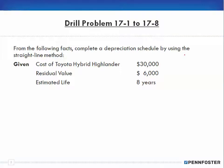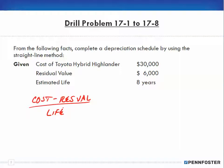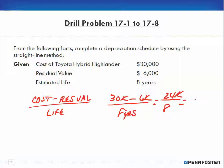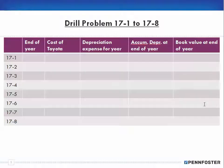For the straight line method, remember we're taking our purchase price — our cost — less the residual value or salvage value, and then dividing by the useful life in number of years. So if our cost is $30,000 and we have a residual value of $6,000, meaning at the end of eight years that's the amount we feel the asset will be worth, we get $30,000 minus $6,000 equals $24,000, divided by 8 years, which means we depreciate the asset $3,000 each year.